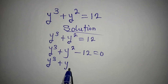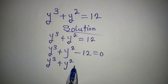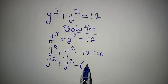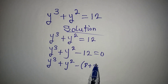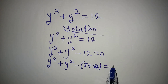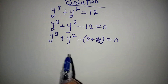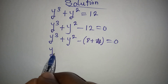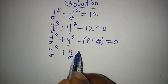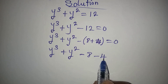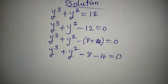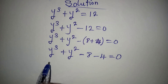Now y to the power of 3 plus y to the power of 2 minus — open bracket — 12 is 8 plus 4, and that will be equal to 0. If I continue with this, then y to the power of 3 plus y to the power of 2 minus 8 minus 4 is equal to 0, because I need to open the bracket with the negative over there.